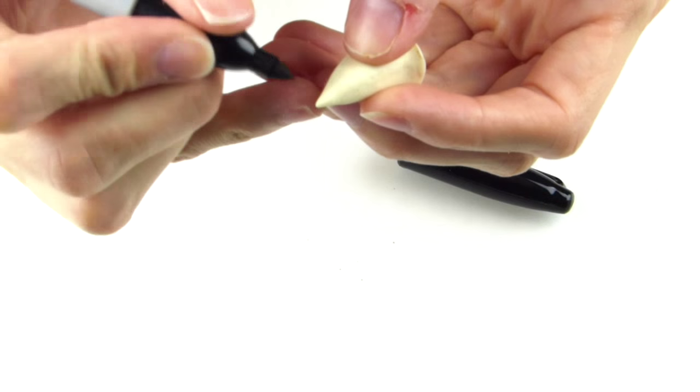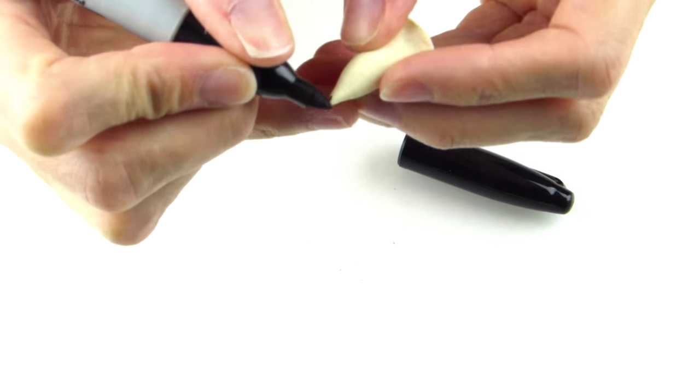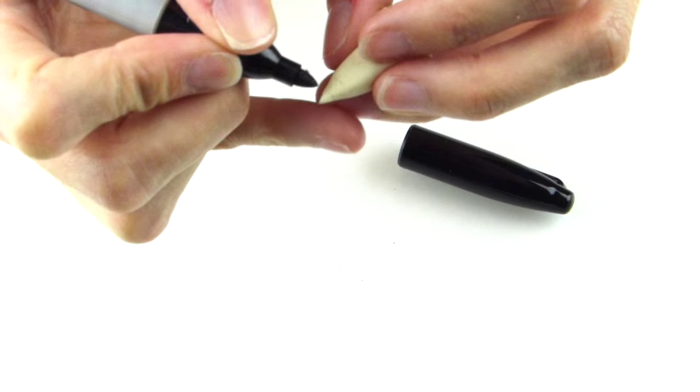Once it's dry, grab a black sharpie and then just go ahead and color the tip of the pencil.